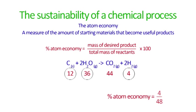On the top we need the mass of the desired product which in this case is hydrogen and it's 4, and on the bottom we need the total mass of reactants so that means both the carbon and the steam, so adding 36 to 12 we get 48. Working this out we can see the atom economy is around about 8.3 percent.